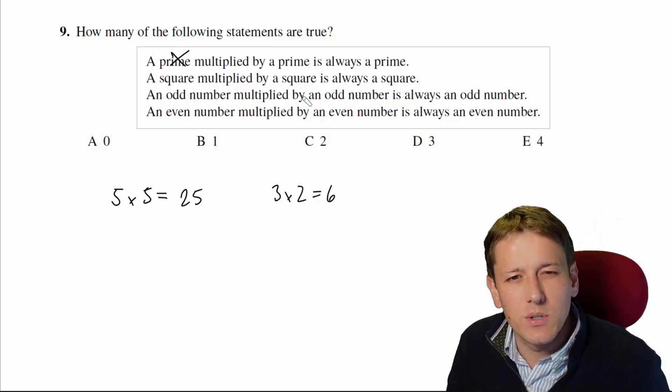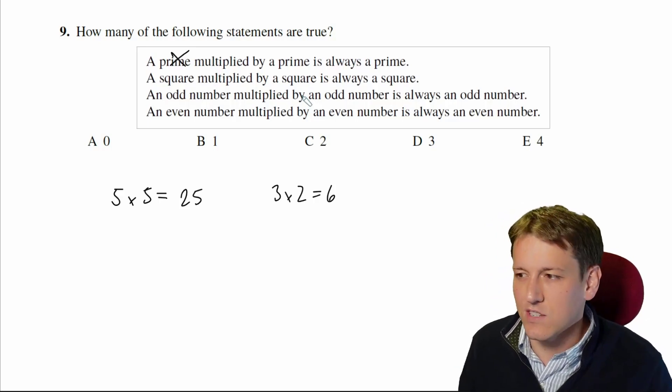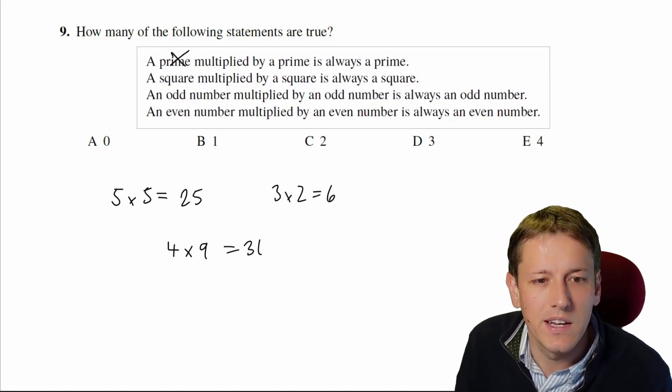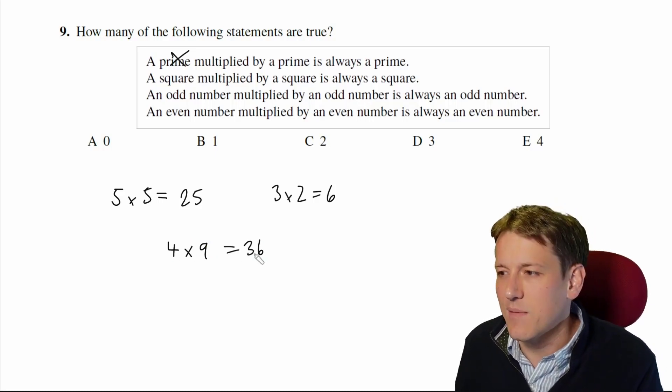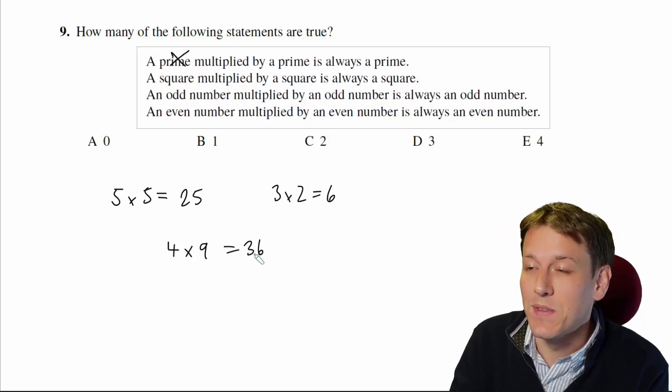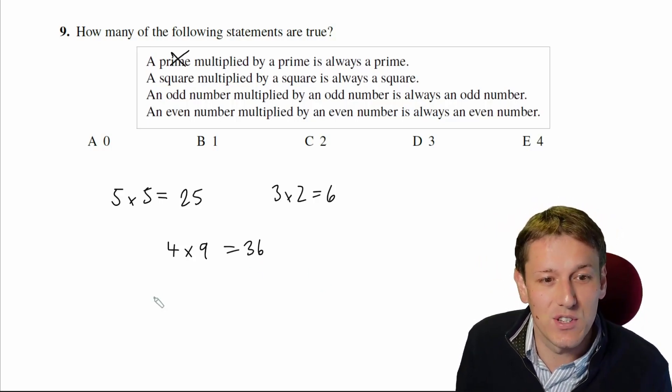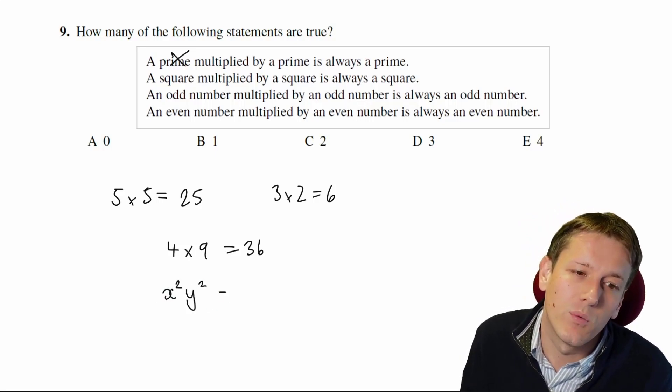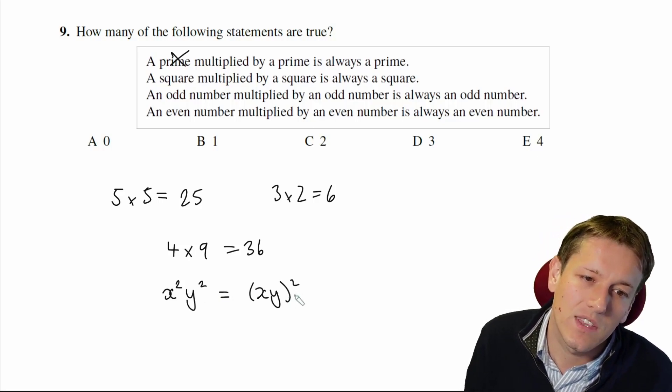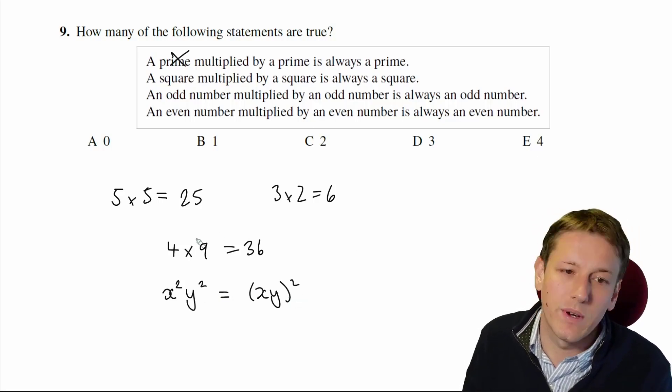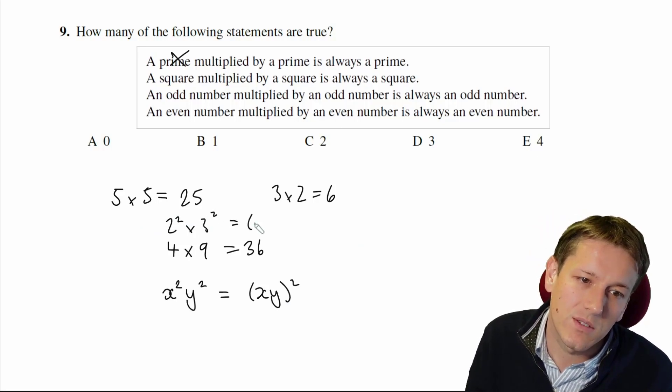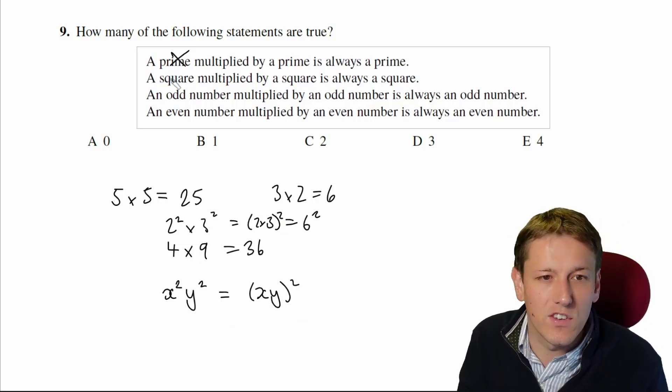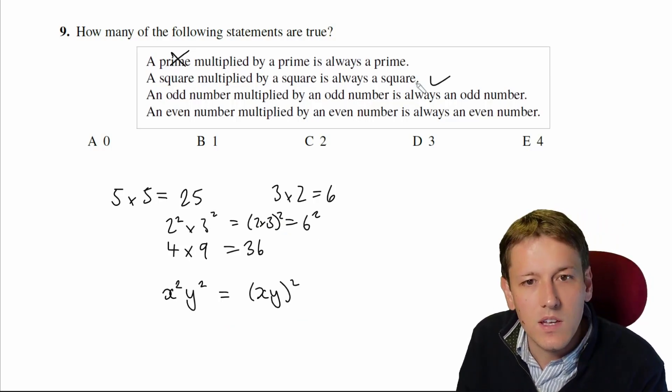A square multiplied by a square is always a square. This is probably the hardest one to really convince yourself of out of these. You could try some examples like 4 times 9 is a square times a square, and you get another square, and if you keep trying it, it will always work because it's true, but if you really want to convince yourself it's true, you'd need to write something like, well, a square number in general is going to be x squared. If I multiply it by y squared, that will be the same thing as having x times y all squared here. For example, here you say 2 squared times 3 squared is 2 times 3 squared, which is 6 squared. So it is always the case that if you multiply a square by a square, you get a square. That one's true.